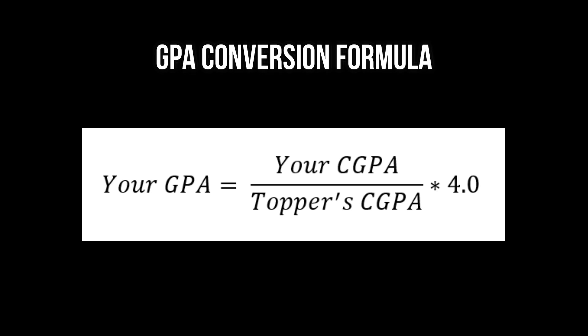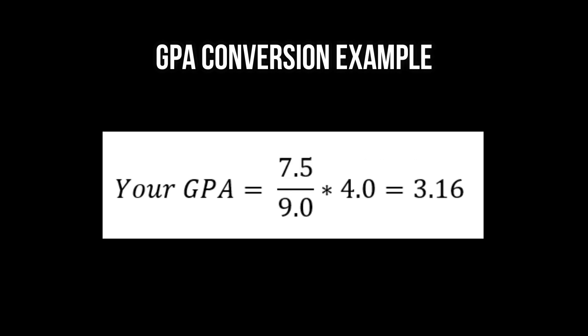Here's a formula you can use to convert your CGPA or percentage — it works with percentage as well — to a GPA. The formula is: take your CGPA, divide it by the topper's CGPA, then multiply by 4.0 to get your GPA. For example, if you have a 7.5 CGPA and the topper has a 9.5 CGPA, your GPA would effectively be that result.